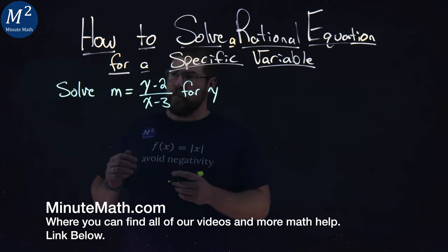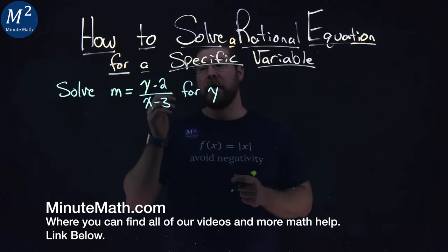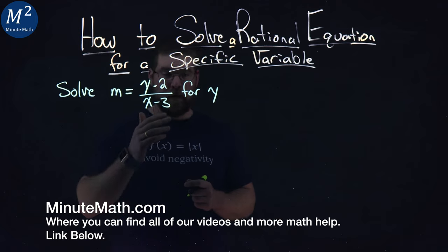We're given this problem right here. Solve m equals y minus 2 over x minus 3 for y.